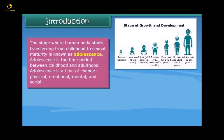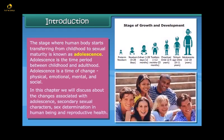The stage where the human body starts transferring from childhood to sexual maturity is known as adolescence. Adolescence is the time period between childhood and adulthood — a time of change: physical, emotional, mental and social. In this chapter we will discuss the changes associated with adolescence, secondary sexual characters, sex determination in human beings, and reproductive health.